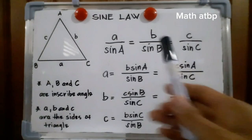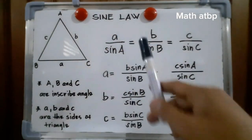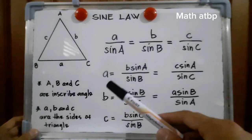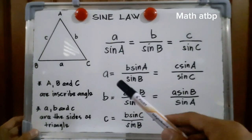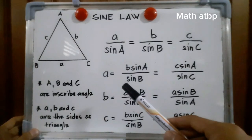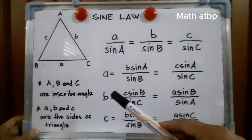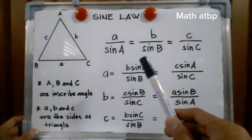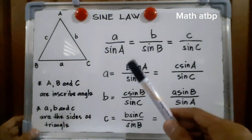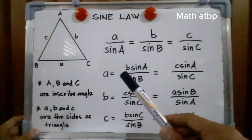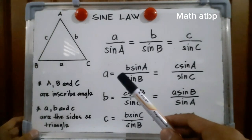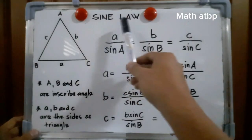Hi, today we'll be discussing sine law. We're done with right triangles. In right triangles, we use the Pythagorean theorem for solving sides, and we also use SOHCAHTOA when given an angle and a side. But SOHCAHTOA and the Pythagorean theorem are limited to right triangles. But what if there is no 90-degree angle in a triangle? So we'll be using the sine law.